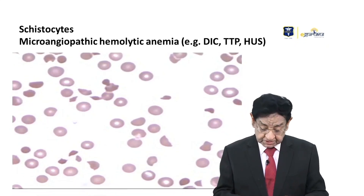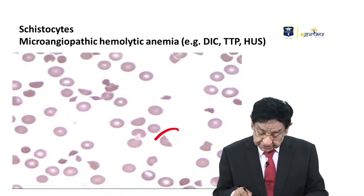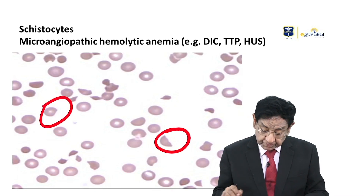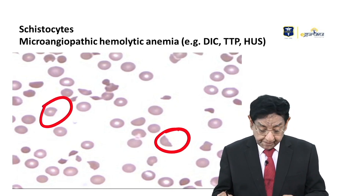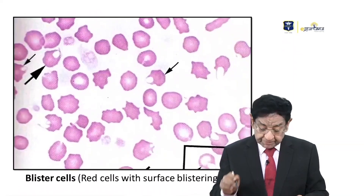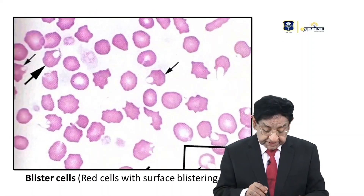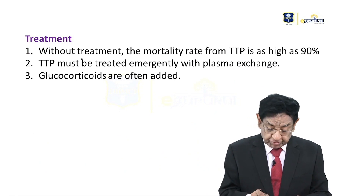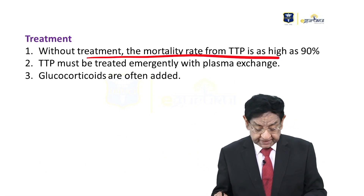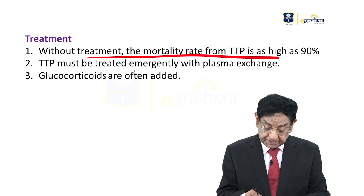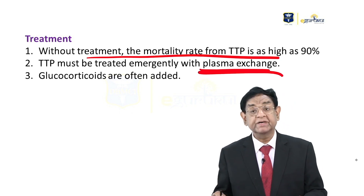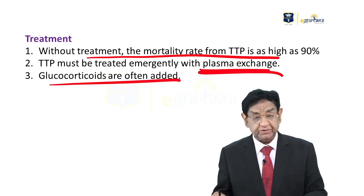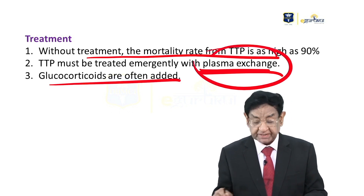Look at this — schistocytes and helmet cells. In some cases we can even see blistered cells. Regarding treatment: without treatment, mortality is very high — 90%. TTP must be treated immediately with plasma exchange. Steroids are often added, but plasma exchange is the main treatment.